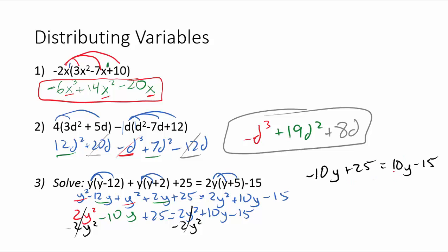Okay. Now that we're at this step, what we'll do is we're going to move the 10y over to this side. We'll get all of our y's together. So I'll move this y over here. That'll give me negative 20y plus 25 is equal to negative 15. Now I'll subtract my 25 over. That gives me negative 20y is equal to negative 40.